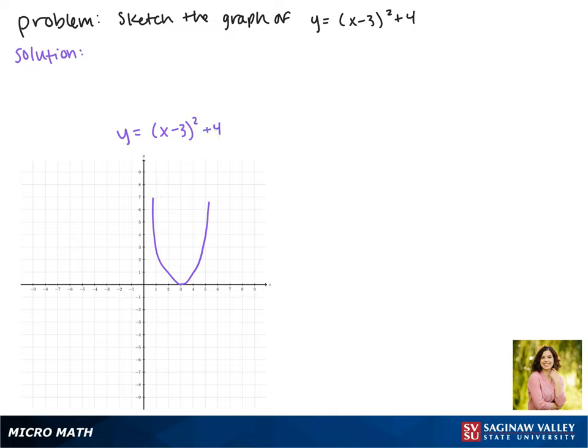Next we have a vertical shift. Since we're adding 4, this moves our function up four spaces. Now our vertex is at the point 3, 4.